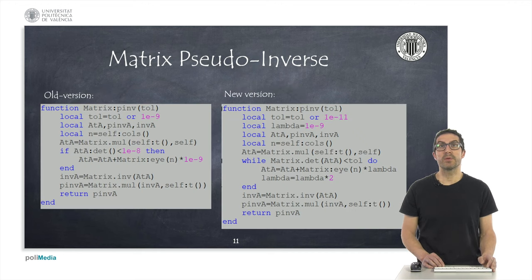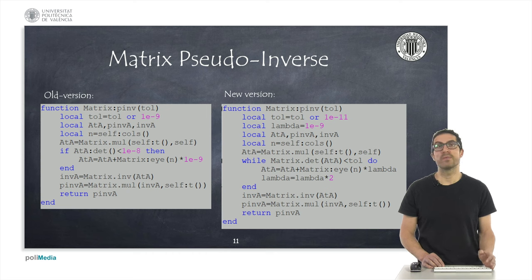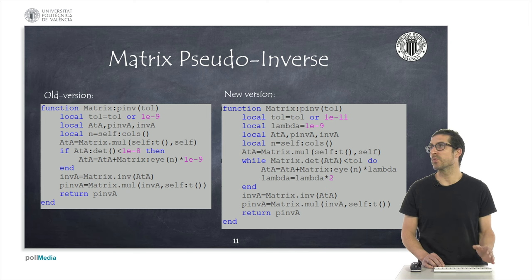The kinematic controller requires computing the pseudo-inverse of the Jacobian matrix. In the code shown here, I include an auxiliary function to compute such a matrix. I explained a similar code when introducing matrix singularity, but here I made small modifications to make computations less sensitive to the tolerance parameter. In return, it computes the regularized method, which needs several iterations to automatically adjust the value of the regularization parameter lambda. You can try both versions and choose whichever you prefer — the older version, which is slightly faster, or the new version, which is less sensitive to the tolerance parameter but slightly slower.